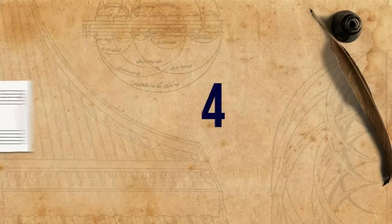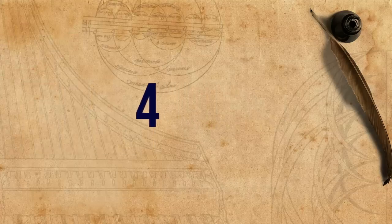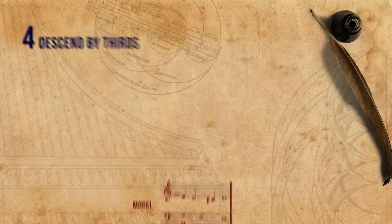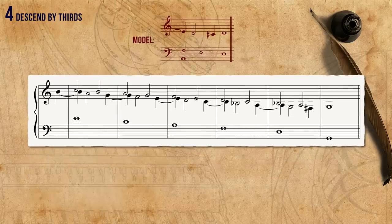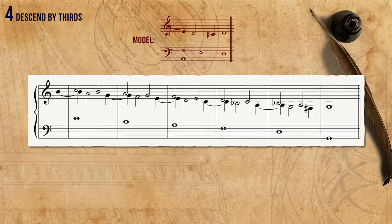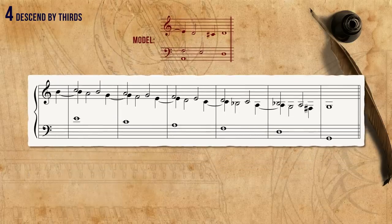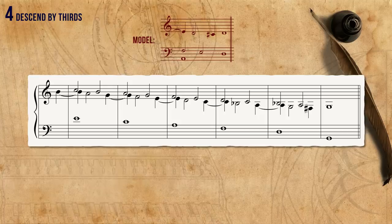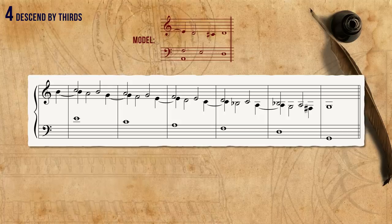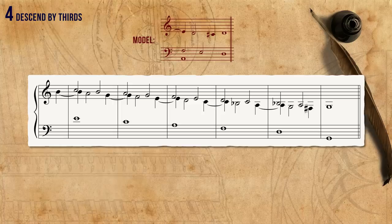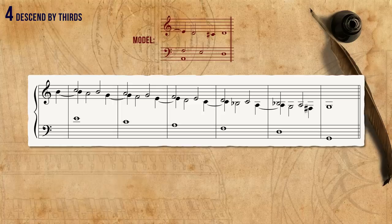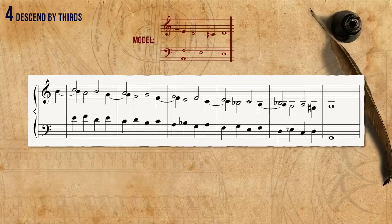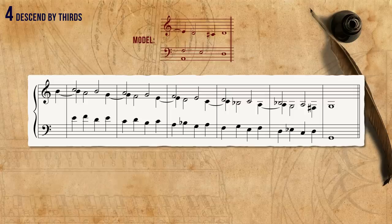The fourth cool thing one may do with a cadenza doppia is to descend by thirds, using the variant with the dissonance between the 6th and the 5th. See what happens when we add a bit of movement in the bass — it almost starts to sound like music.